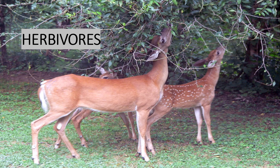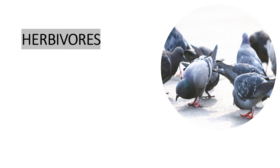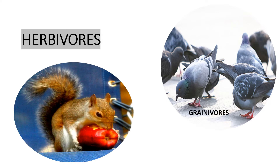Herbivores use plants directly as food. For example, deer, cow, buffalo, goat, etc. There are some herbivores which feed on grains and they are called grainivores. For example, pigeon, sparrow, crow, etc. Other herbivores which feed on fruits are called frugivores. For example, squirrel.